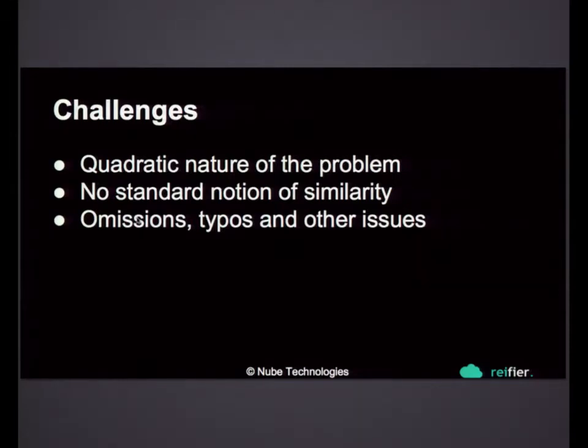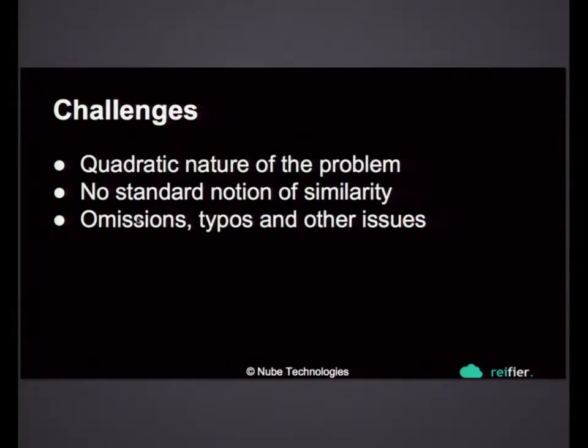The problem is also hard to solve because if you look at n records, you're actually comparing n-into-n pairs, which makes it quadratic in nature and very difficult to solve. There's no standard notion of similarity across records — how do I say if the first name has three characters the same and the last name has the first six characters the same and the age is four or five years apart, these people probably refer to the same person? Similarly with organizations, products, restaurants, movies, any kind of data, there is no standard notion by which we can define similarity. Underlying data also has a lot of omissions, typos, errors and other issues which make the problem even more challenging.